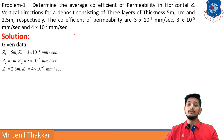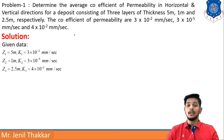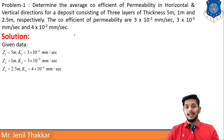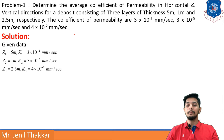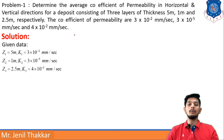Let us write the given data. z1 = 5 m, z2 = 1 m, z3 = 2.5 m. Similarly, k1 = 3×10⁻² mm/s, k2 = 3×10⁻⁵ mm/s, and k3 = 4×10⁻² mm/s.